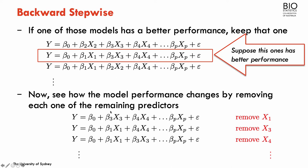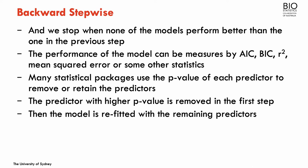Now with x2 removed, I fit all the models again removing each remaining variable one at a time — removing x1, putting x1 back, removing x3, putting x3 back, removing x4, and so on. I stop when removing any predictor gives worse performance than keeping it in the model. We can use different measures to compare performance: AIC, BIC, R-squared, or mean squared error. Many statistical packages use p-values: fit the full model, identify the predictor with the highest p-value as the worst, remove it, refit with p-1 predictors, and repeat until all p-values are significant.